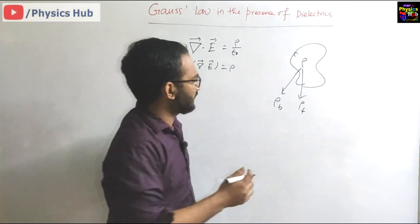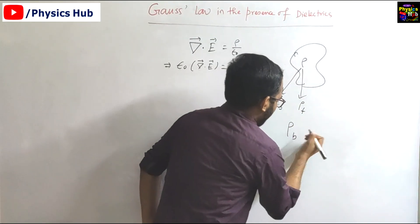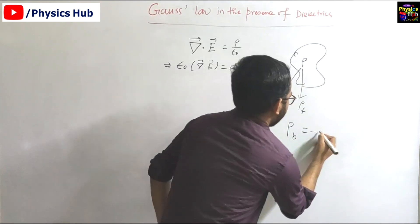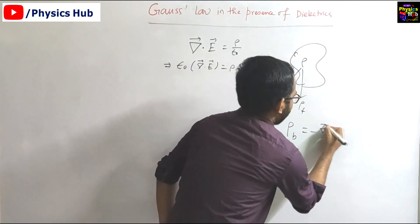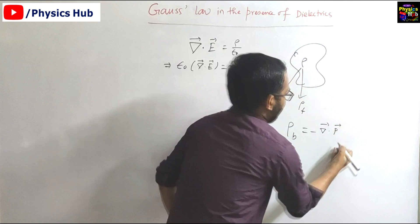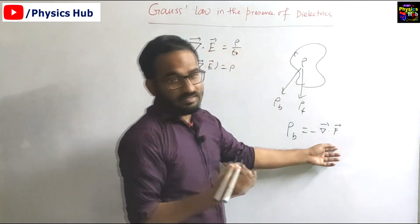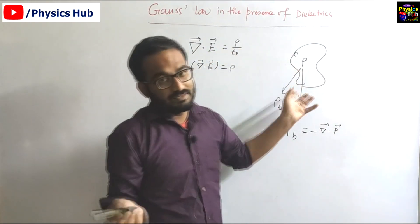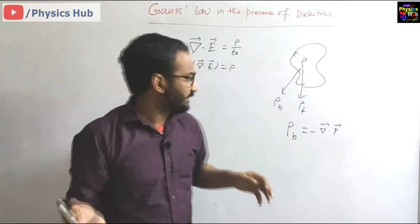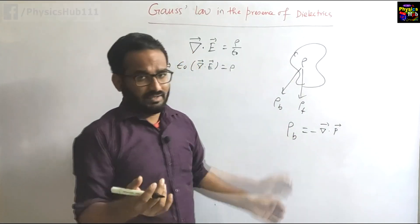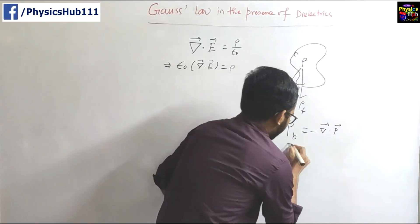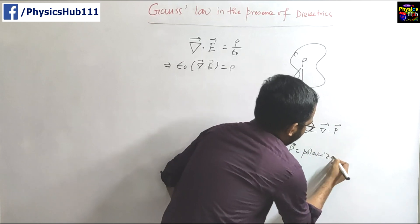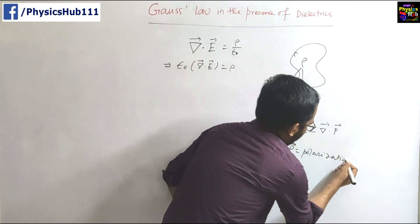Now this bound charge density we have seen is given by minus of divergence of P, where P is the polarization vector. Because if you have some dielectric placed in an electric field it will be polarized. So P is the polarization vector.